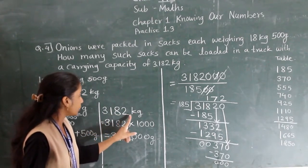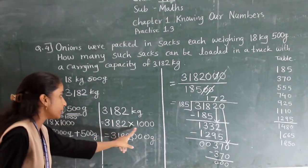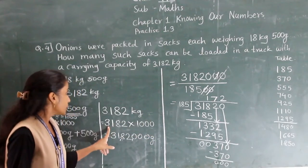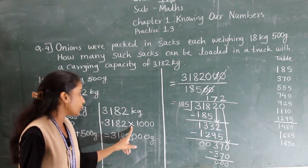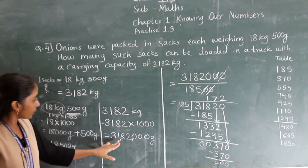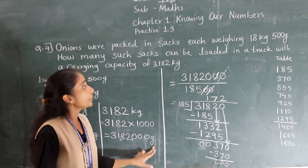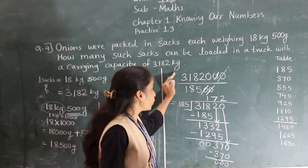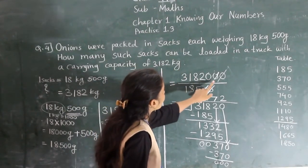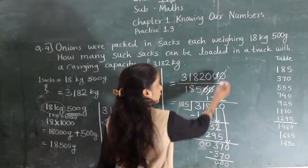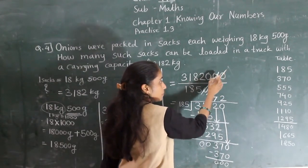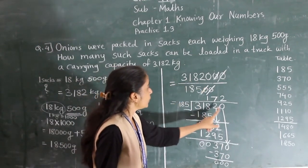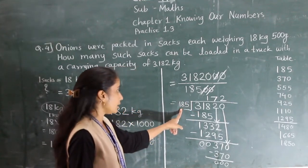Then 3,182 kg converted to grams: 3,182 × 1,000 grams = 3,182,000 grams. Cancelling two zeros from both, we get 31,820 divided by 185.